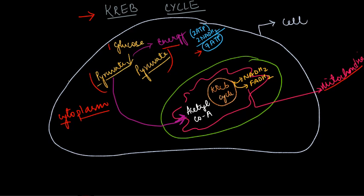When pyruvate enters into the mitochondria, it gets changed into acetyl coenzyme A. How does it get changed? There is a removal of carbon dioxide. This acetyl coenzyme A will then enter into the Krebs cycle. After the Krebs cycle, it will produce energy: NADH₂, FADH₂, and GTP. The importance of the Krebs cycle is that it also produces energy.